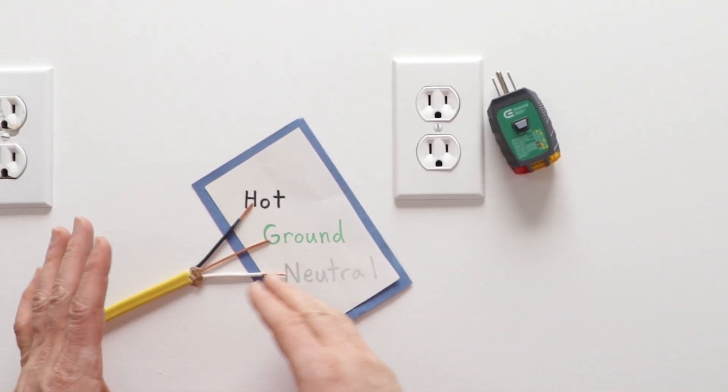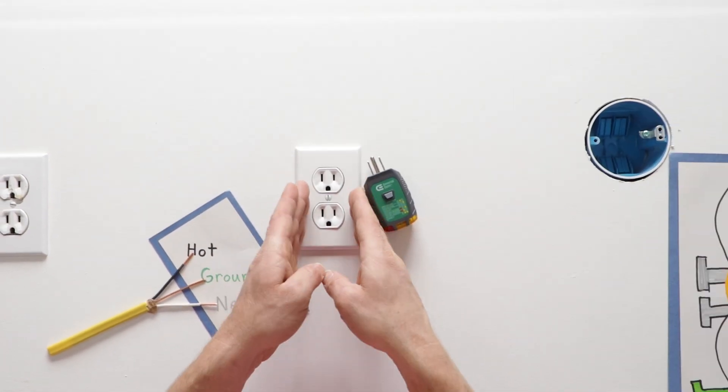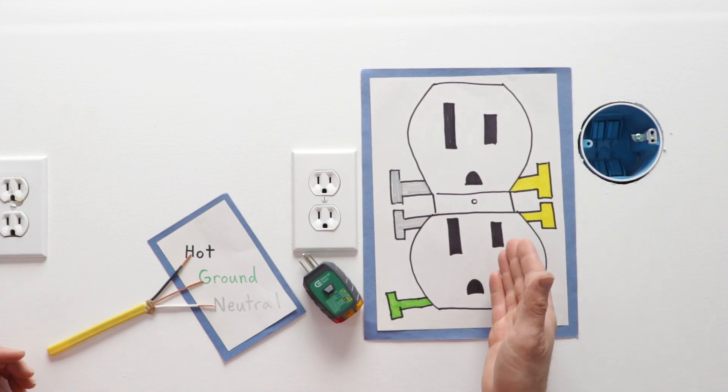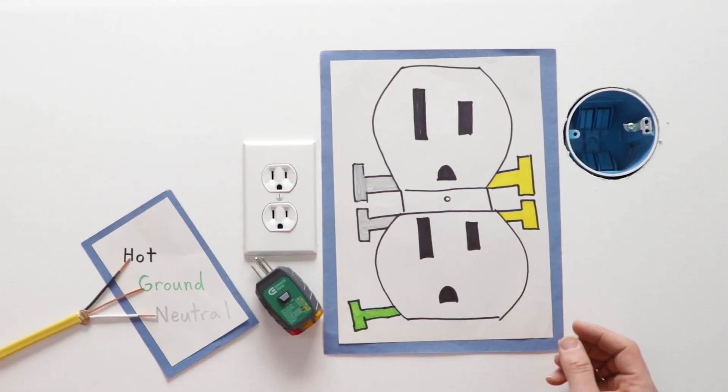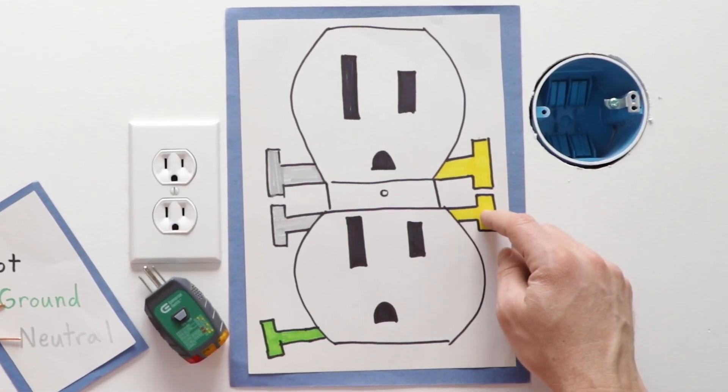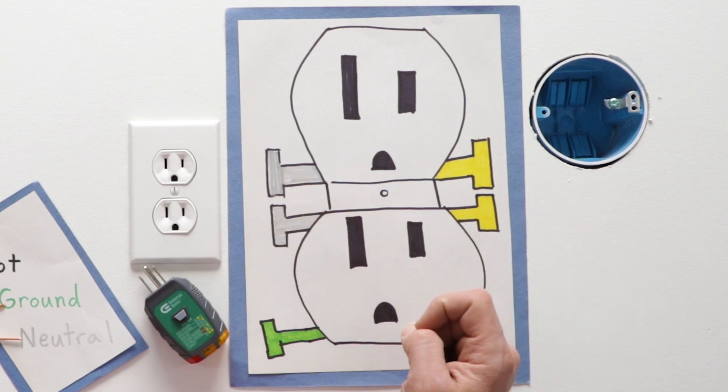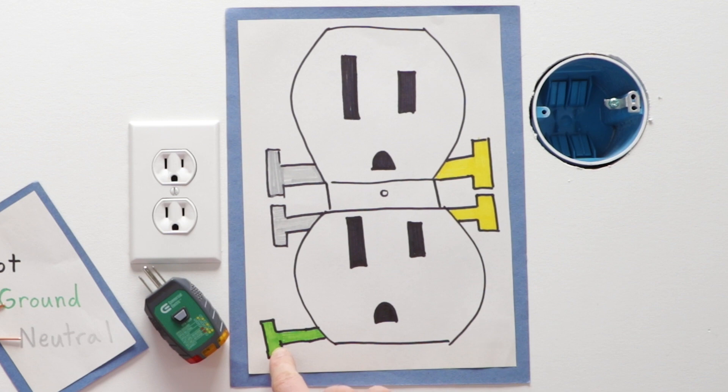You've got these three wires. They come to the receptacle. Here's my mock receptacle. The receptacle has brass screws on one side, silver screws on the other side, and a green screw.